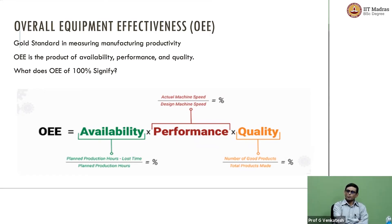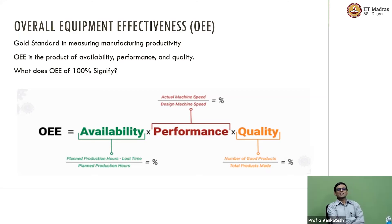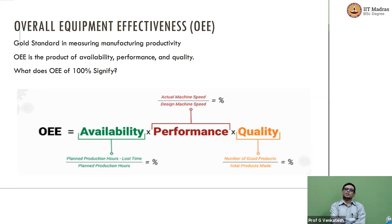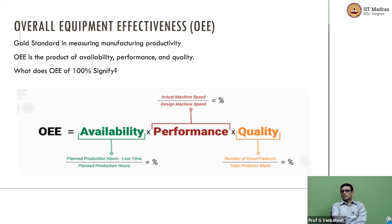Either you have a breakdown or you don't — availability is a hit-and-go thing; you might get it or not. Performance is a function of how well the guys are doing on that shift. Let them do this exercise: find availability, performance, and quality for week 1 and week 3 for the data given.